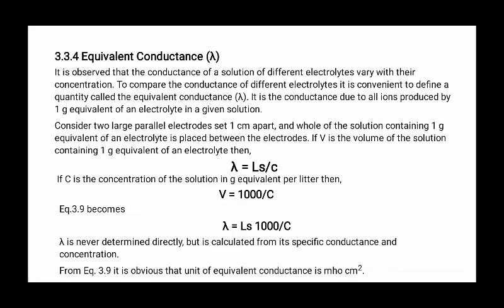Now, what is meant by equivalent conductance? It is denoted with the help of letter lambda. It is observed that the conductance of solution of different electrolytes vary with their concentration. To compare the conductance of different electrolytes, it is convenient to define a quantity called equivalent conductance. It is the conductance due to all ions produced by 1 gram equivalent of an electrolyte in a given solution.